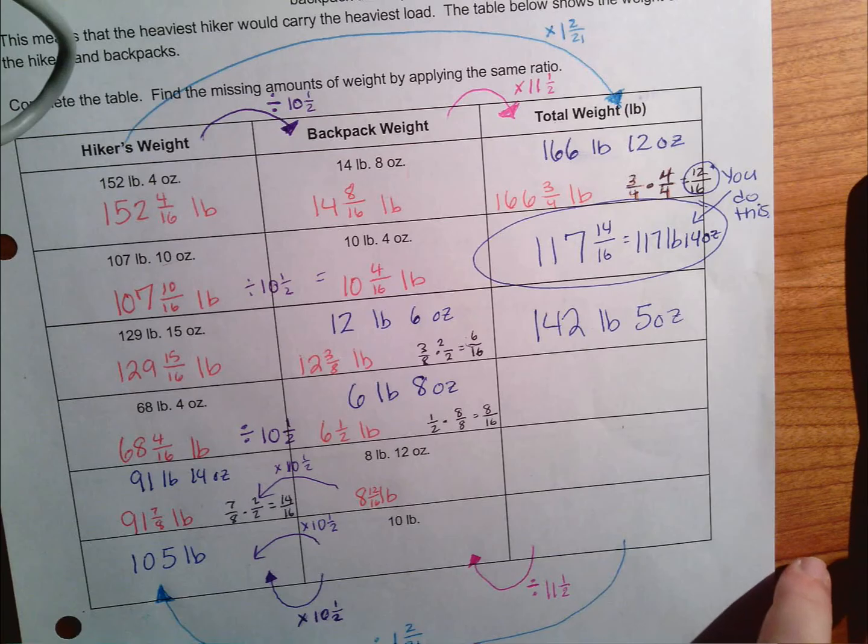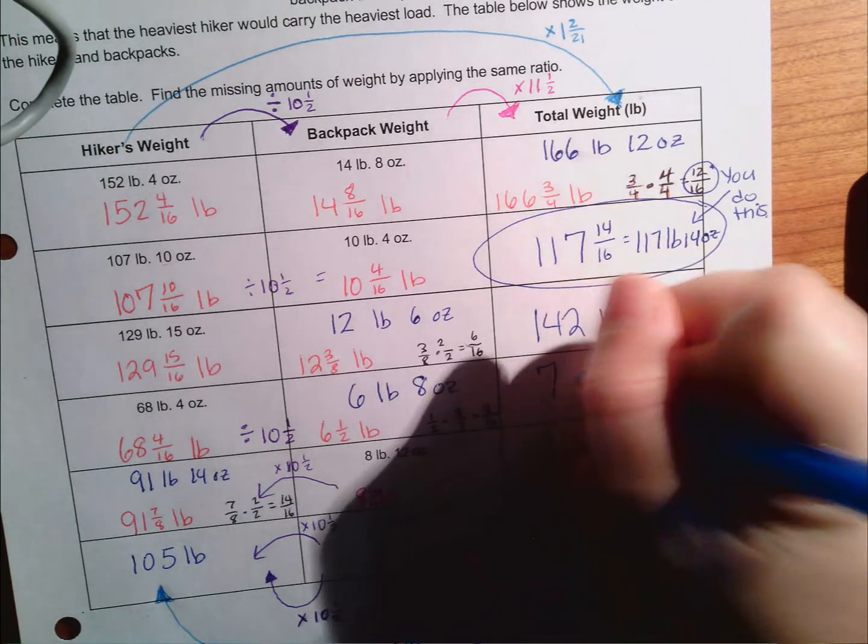That gives me 74 pounds and three-quarters of another pound, in other words 12 ounces.